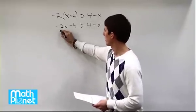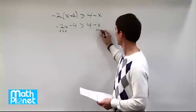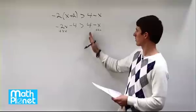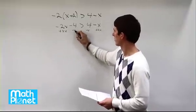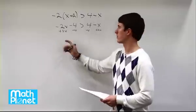Plus 2x, plus 2x, and at the same step we'll put the number terms together. So minus 4, minus 4. So we can see we'll have all the x's here, all the numbers here.